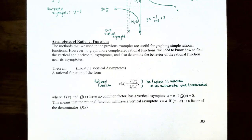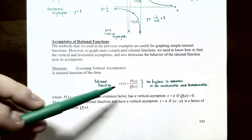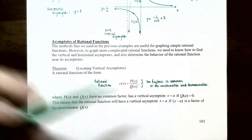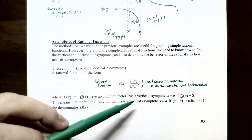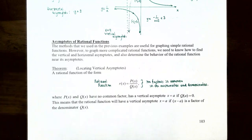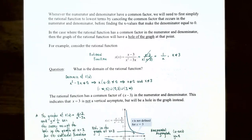The theorem for locating vertical asymptotes: a rational function r(x) equals p(x) divided by q(x), where p(x) and q(x) are polynomial functions with no factors in common — meaning the function is already in lowest terms — has vertical asymptotes at x equals a wherever the denominator equals zero. A vertical asymptote occurs at x equals a if x minus a is a factor of the denominator q(x). Whenever the numerator and denominator do have a common factor, first simplify to lowest terms by canceling any common factors before finding the x values that make the denominator zero.